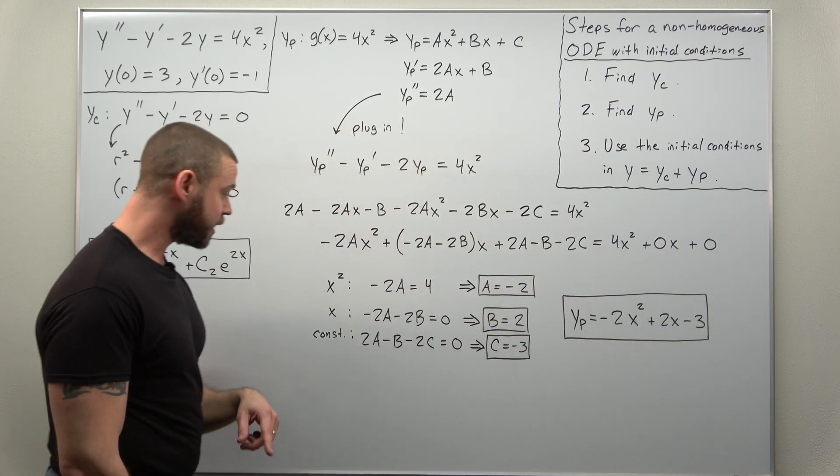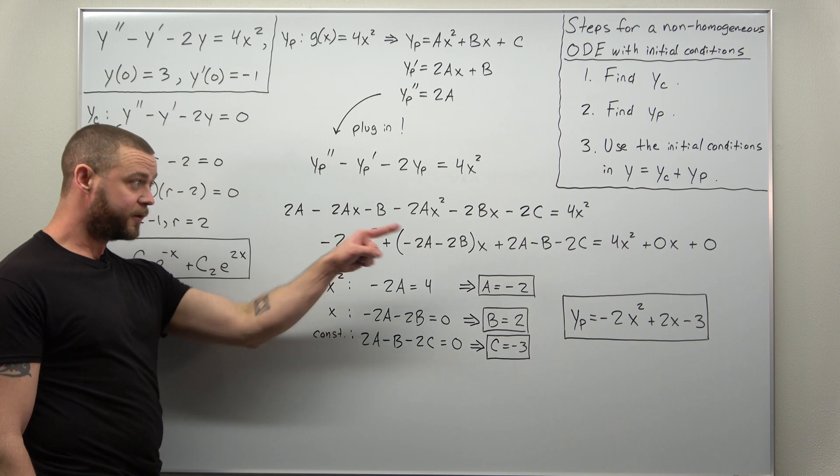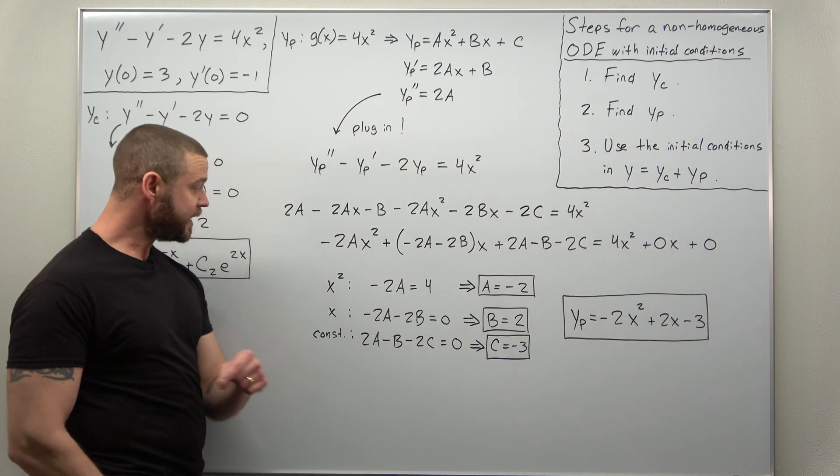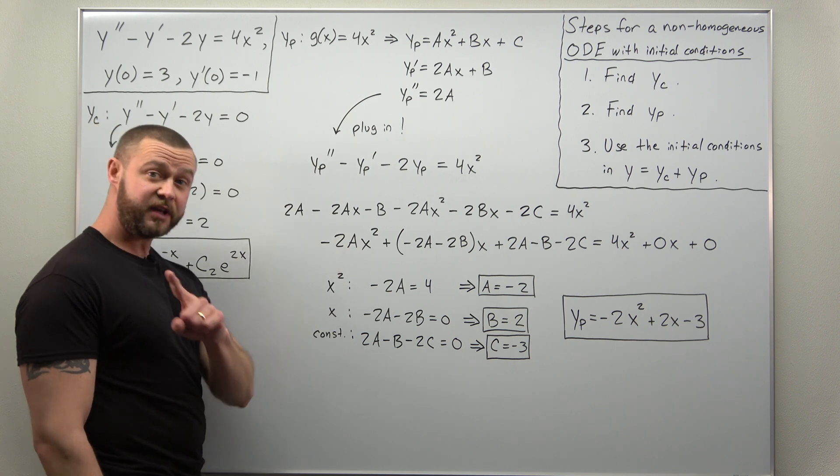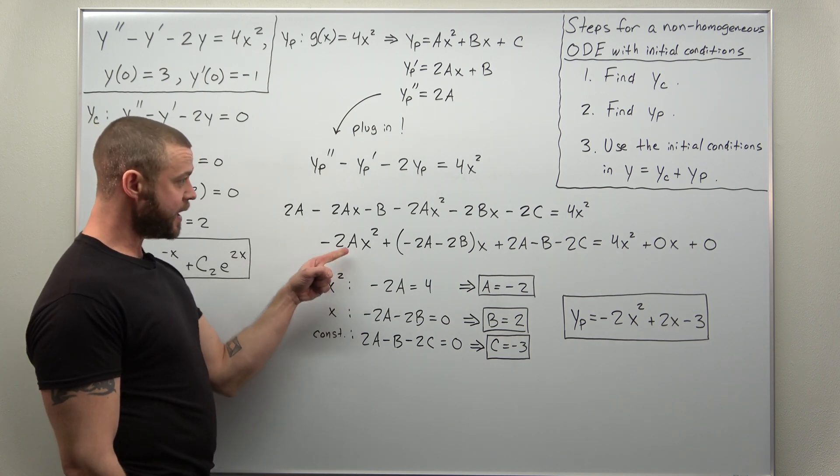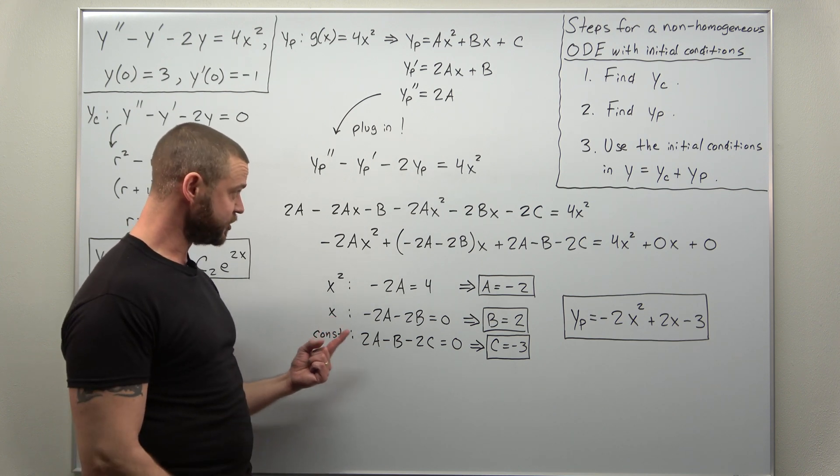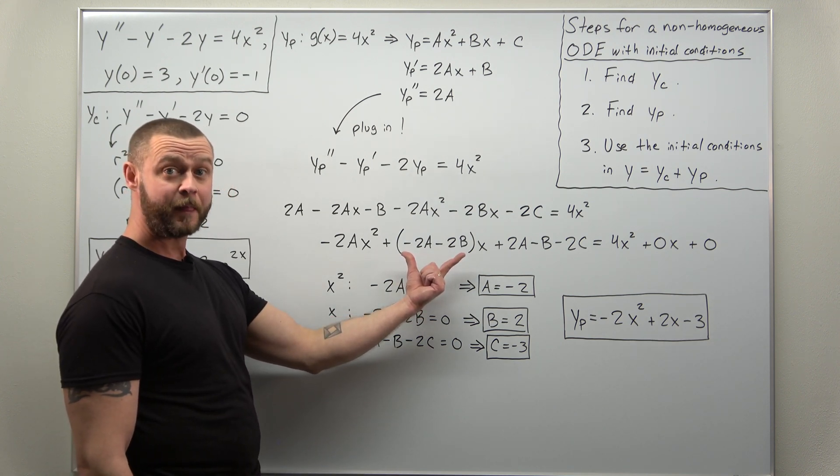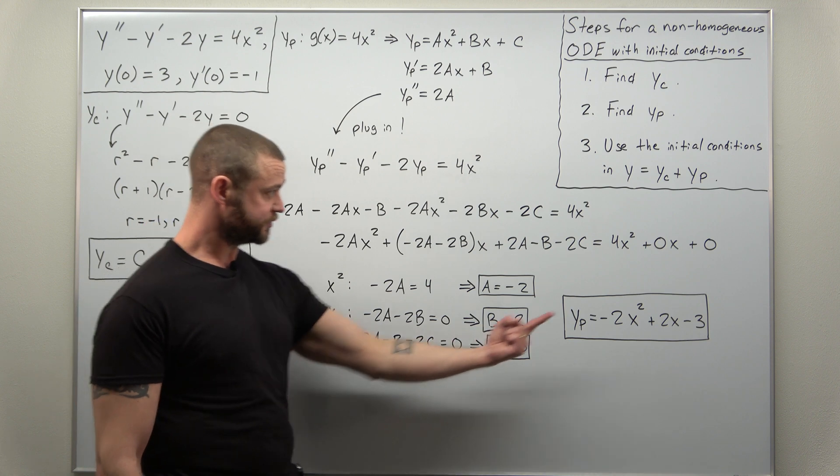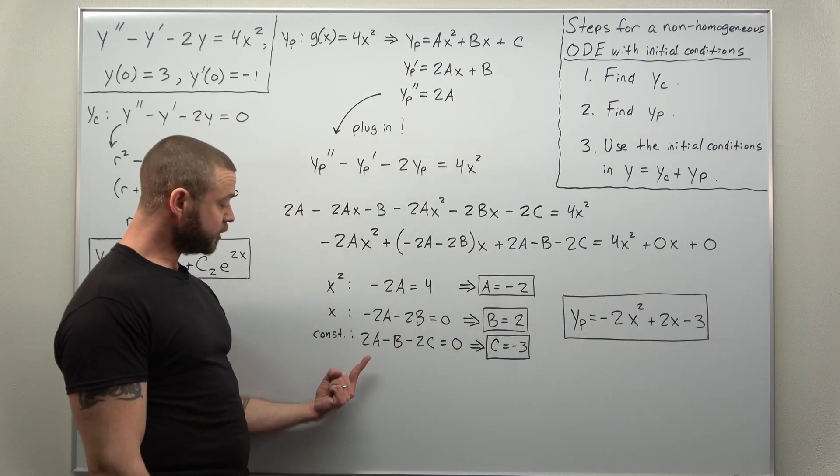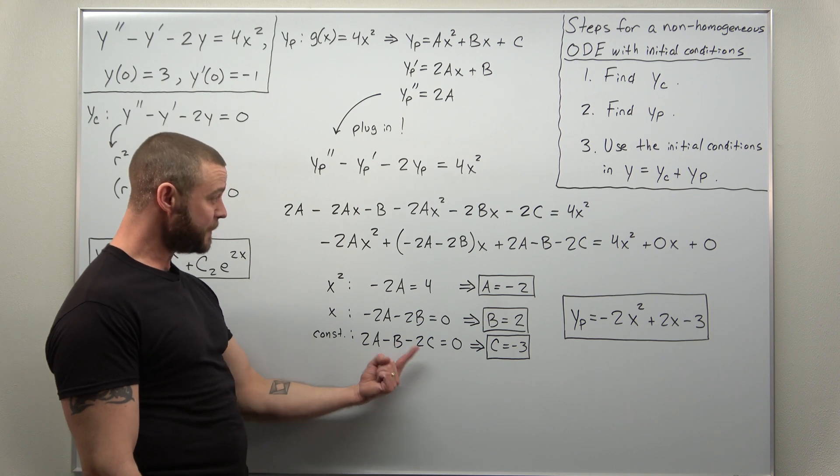And that's where now equating coefficients, powers of X on each side, we get our system of equations. Your X squareds give you the equation negative 2A equals 4. Your X coefficients negative 2A minus 2B equals zero. And then your constant terms, 2A minus B minus 2C equals the constant term there, zero.